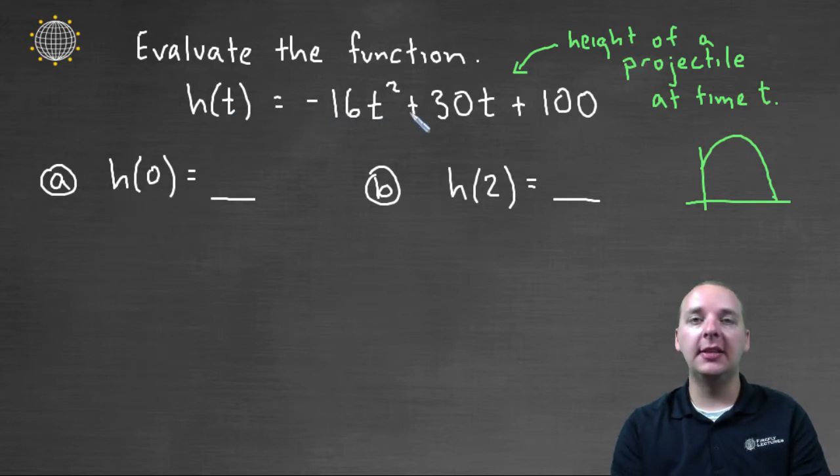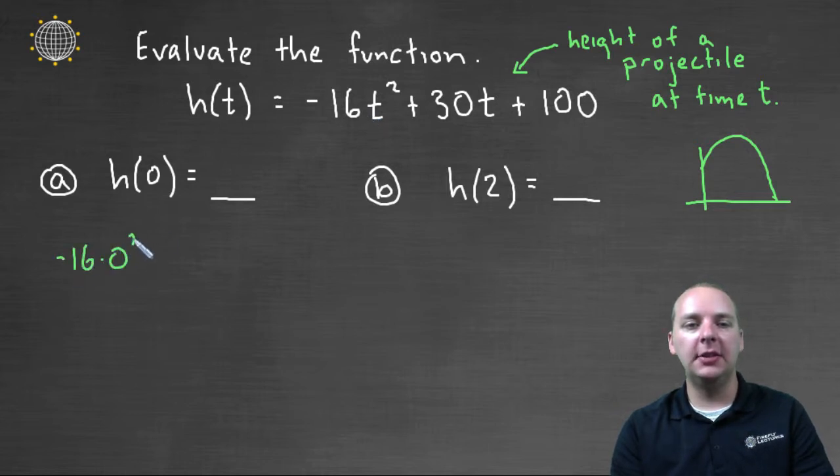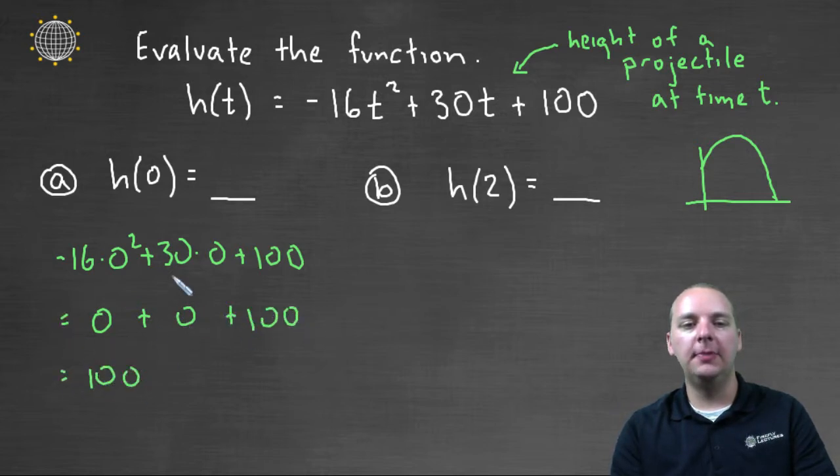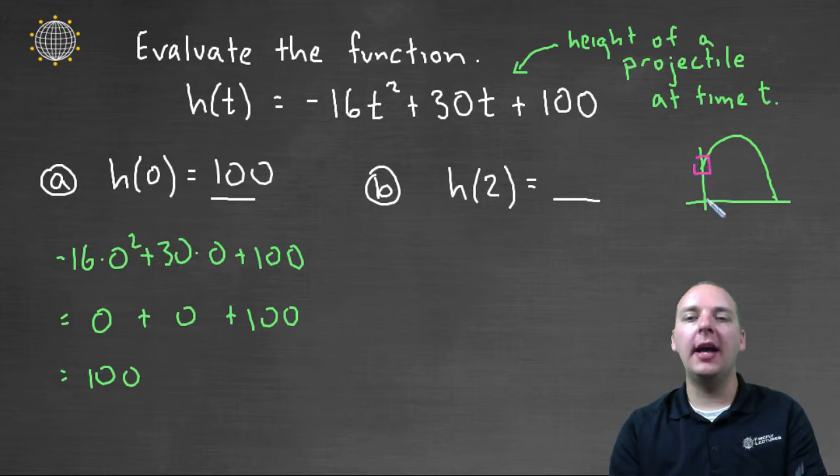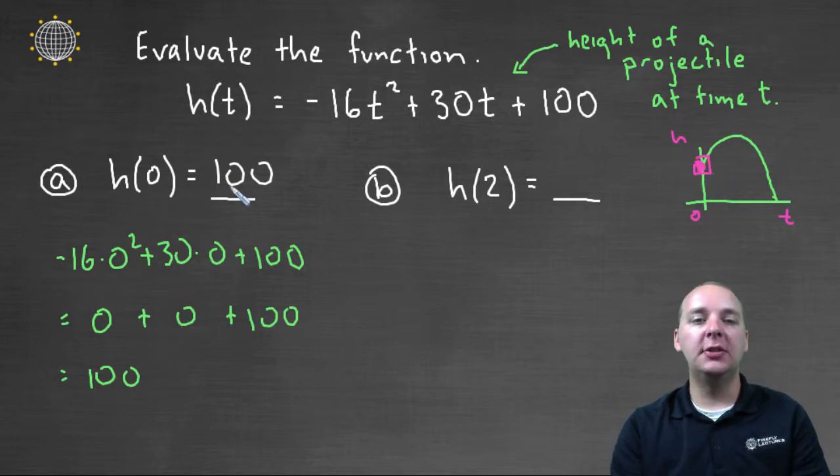What's h of zero? That means take the t's out and plug in zero. Negative sixteen times zero squared plus thirty times zero plus one hundred. So we'd get zero plus zero plus one hundred, that would of course equal one hundred. Now before we go to the next example, let's think about what does that mean exactly? Well if this is the height of a projectile at time t, and we plugged in time zero, then what do you think a hundred represents? Well that's going to represent the initial height, that's the height when t is zero. And so this projectile was tossed or launched from a height of a hundred feet or a hundred meters or something like that up in the air, and then it went up and then it came down and hit the ground.